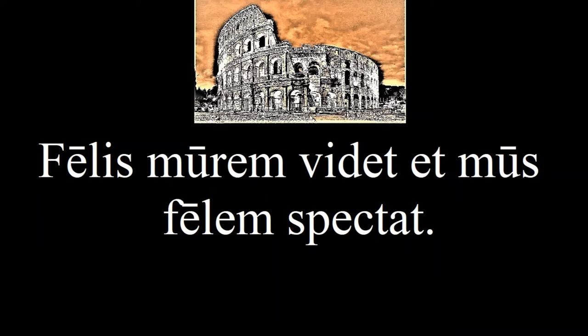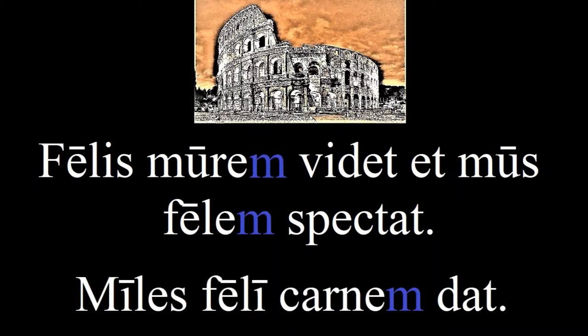Third declension nouns are pretty complicated, so let's review what we learned about them. In the last lesson's story, we had a sentence showing that for almost all third declension nouns, they always end in 'em' when serving as the object. We can see this also in the next sentence. This sentence also shows the dative case, or the recipient, which is indicated with an 'e' ending. And as was mentioned in the last lesson, this ending indicates a different case than the same ending on second declension nouns.